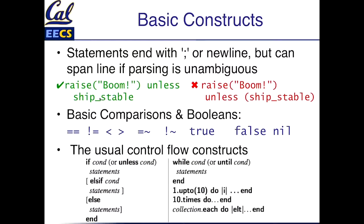In Ruby, even though semicolons can be used to end statements, you never see them. You put each statement on its own line because that's easier to read. You have to be careful with the parser when breaking statements across lines. Here's two examples: one where the line break is after the word 'unless' - 'I'm going to raise a boom exception unless the ship is stable' - that parses correctly. It would be incorrect to put the line break after 'raise boom' because 'raise boom' by itself is a legal Ruby statement, and then the interpreter is confused by the 'unless' that follows.